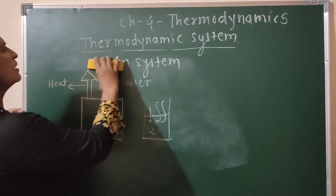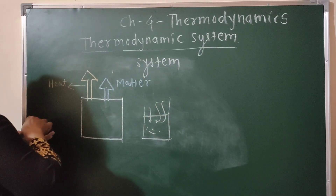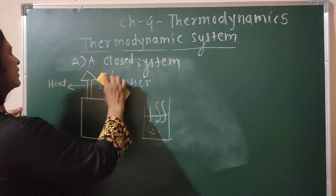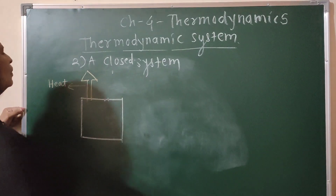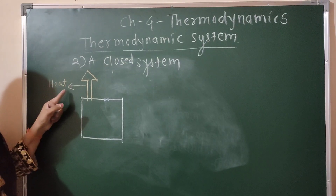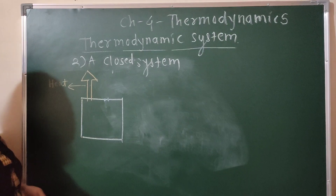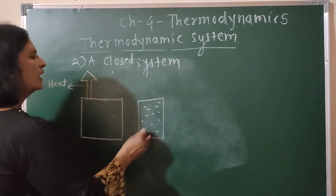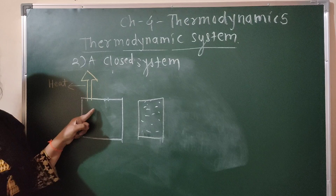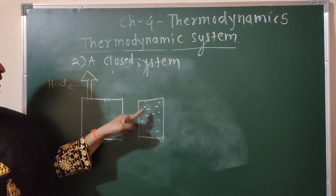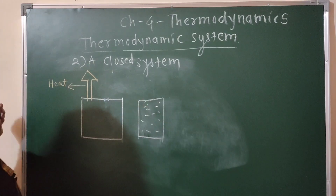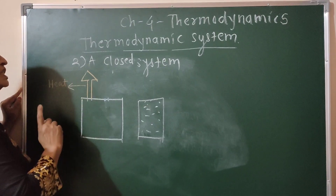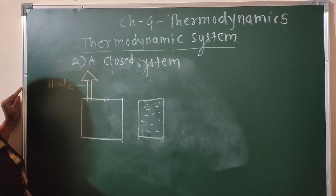The second type is a closed system. In a closed system, only heat can be exchanged between the system and surrounding. For example, water boiling in a sealed water boiler — only heat can exchange with the surrounding, but matter like steam cannot transfer from this system to the surrounding. Therefore, a closed system is a system in which only heat is allowed to exchange with the surrounding.